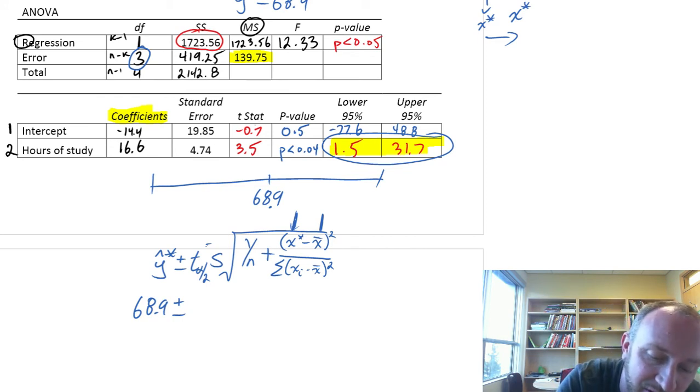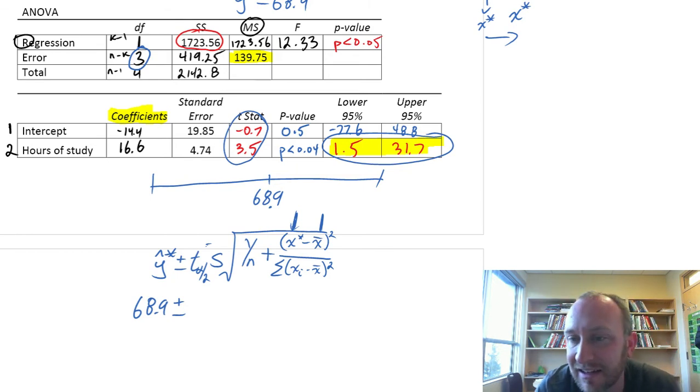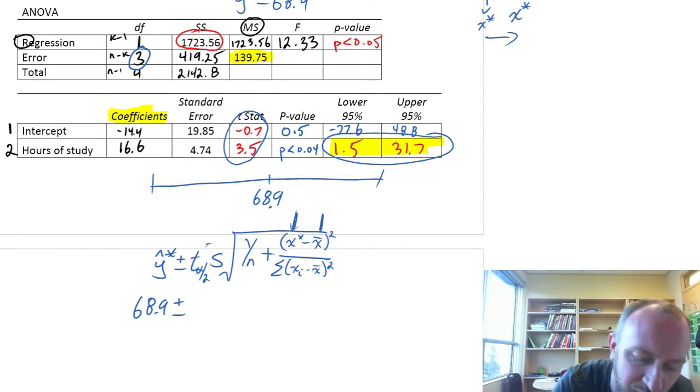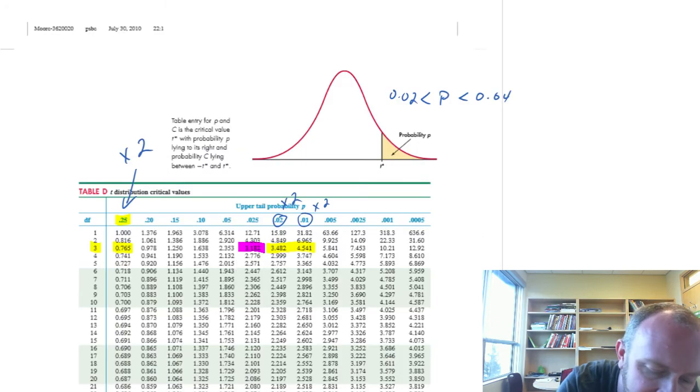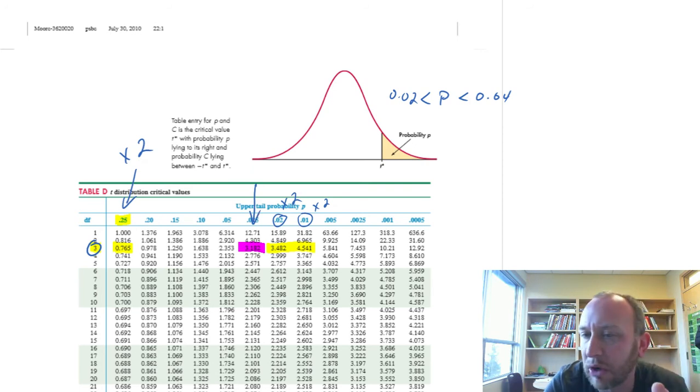You'll notice that was also the same for when we did our t-statistics back a couple of videos ago. And so, here, just as a refresher, three degrees of freedom, alpha 0.05. So alpha divided by 2 is 0.025.